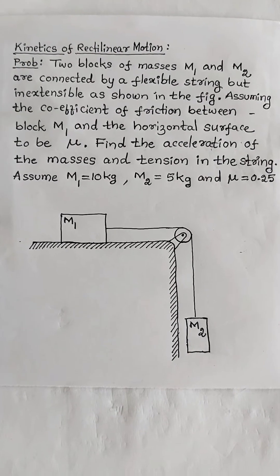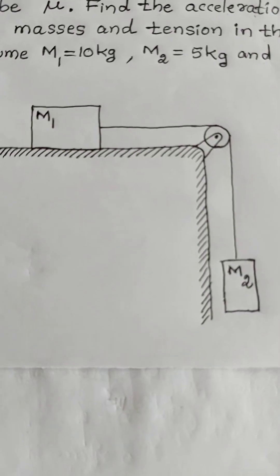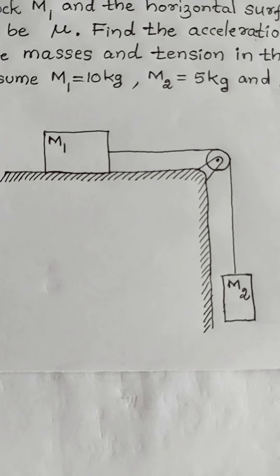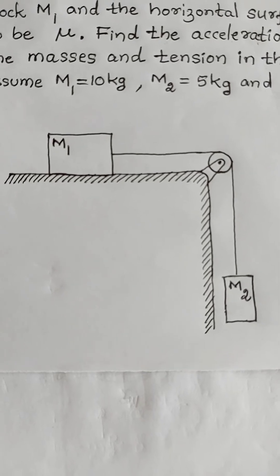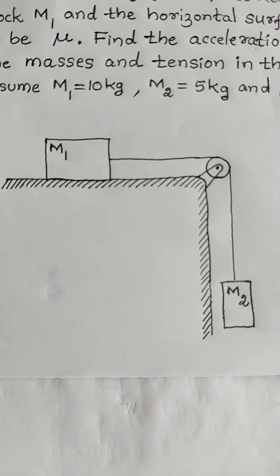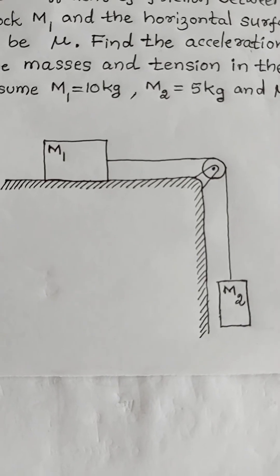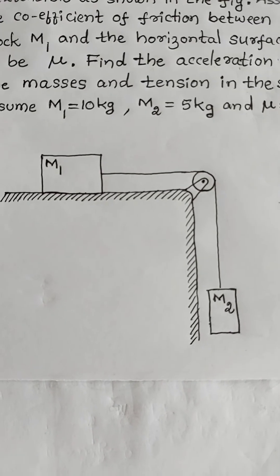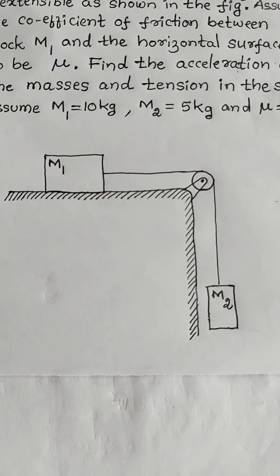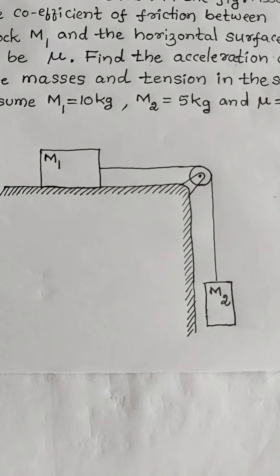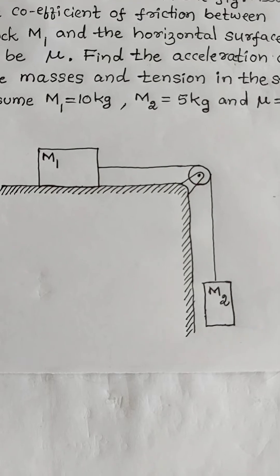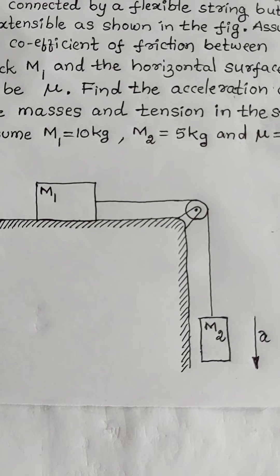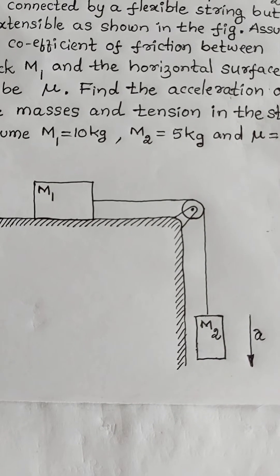For the given problem statement, this is the problem figure. Block M1 is placed on the horizontal ground and M2 is suspended by means of a string and pulley. These two blocks are connected by means of a string. In this problem figure, we can assume when M2 is moving in the downward direction with acceleration small a, M1 also moves in the rightward direction with the same acceleration.